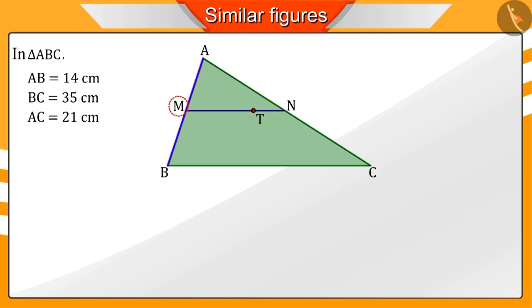And point M divides the side AB into two parts AM and MB. And point N divides the side AC into two parts AN and NC.